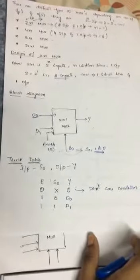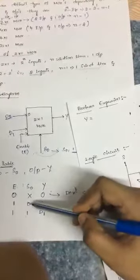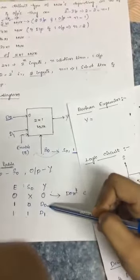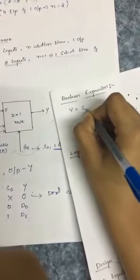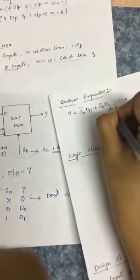From the truth table, we write the Boolean expression. The output y equals: when s-naught is zero, output is d-naught, and when s-naught is one, output is d1. So the Boolean expression is: y = (s-naught-bar · d-naught) + (s-naught · d1). Here, s-naught-bar means s-naught equals zero, and s-naught means it equals one.